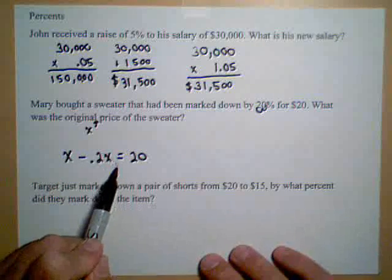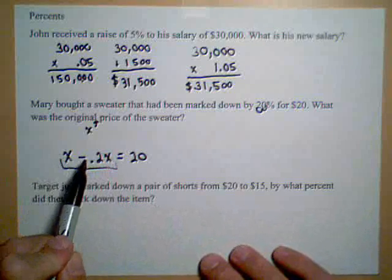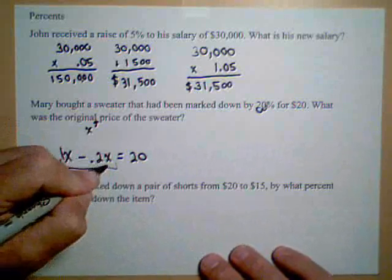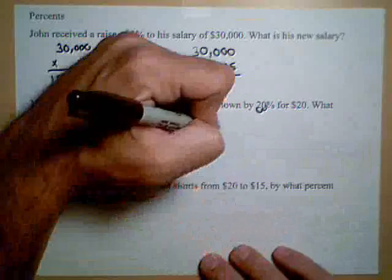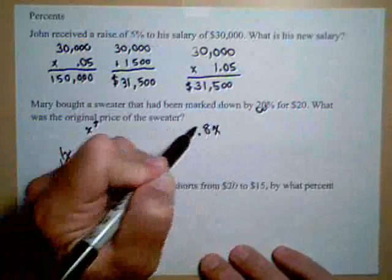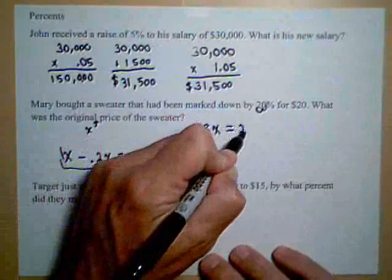Now, we can combine like terms here, because we have X minus .2X. So we can think of that as 1X minus .2X. So 1 minus .2 is .8. So what we get is .8X equals 20.